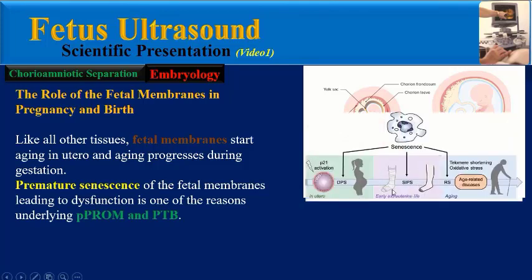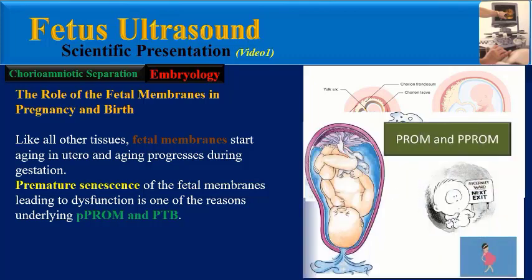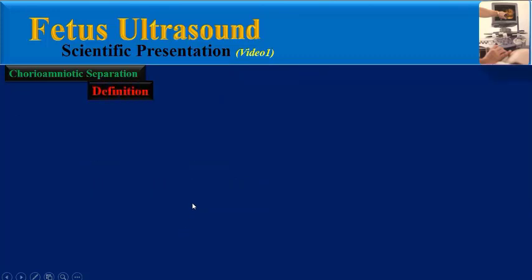Like all other tissues, fetal membranes start aging in utero and aging progresses during gestation. Premature senescence of fetal membranes leading to dysfunction is one of the reasons underlying premature rupture of membranes and preterm births.